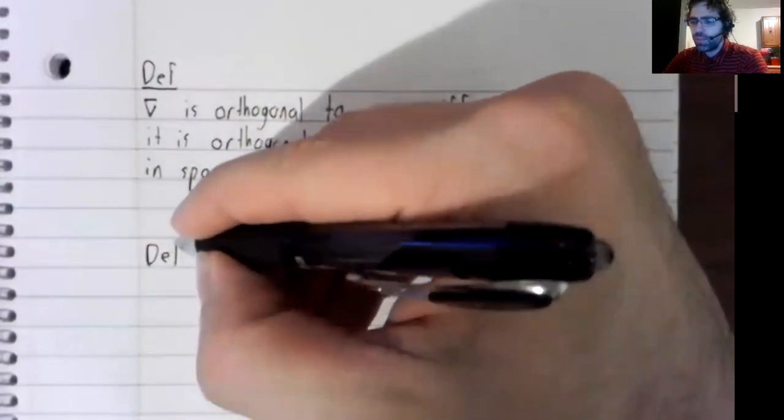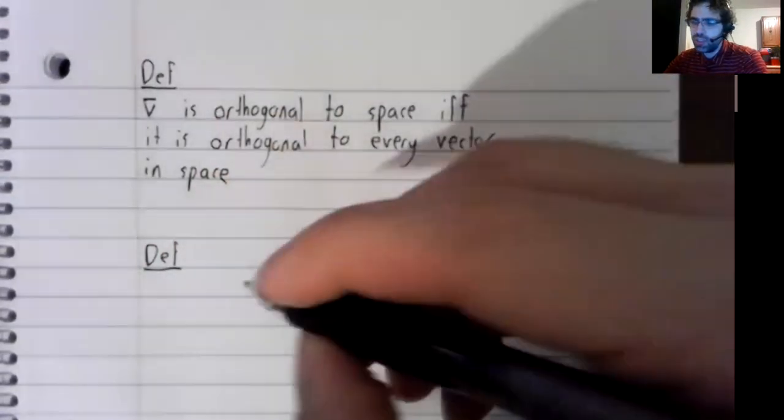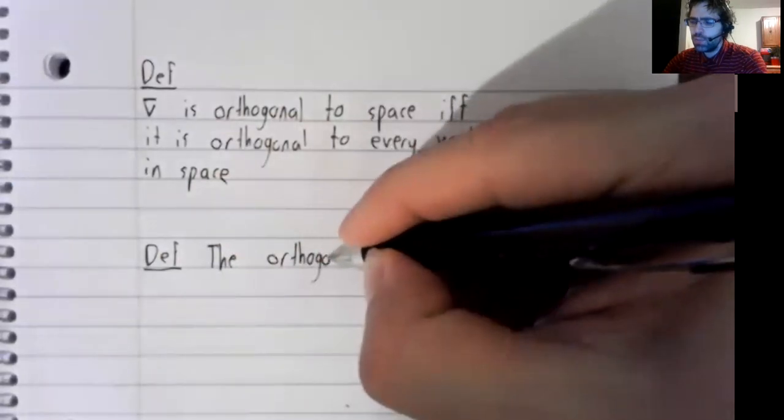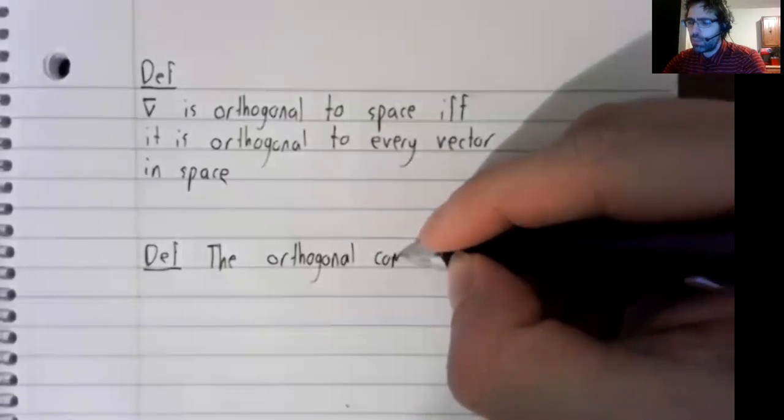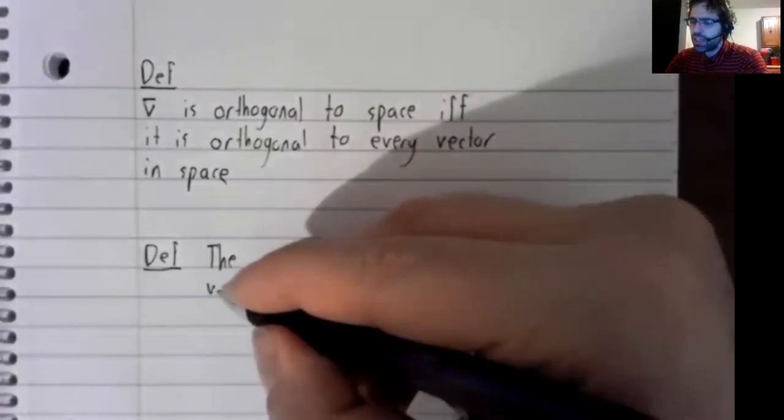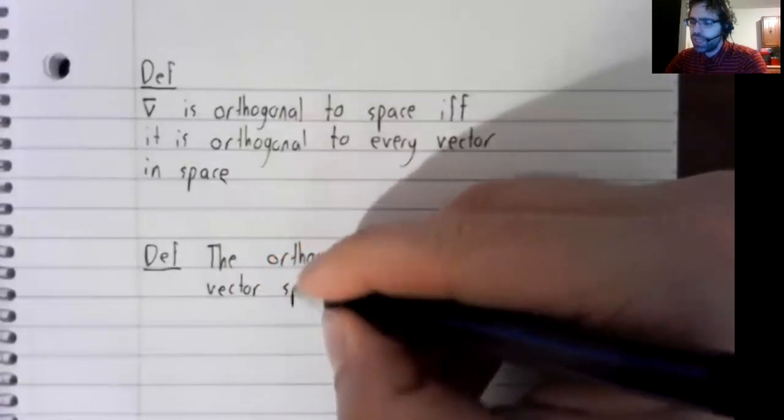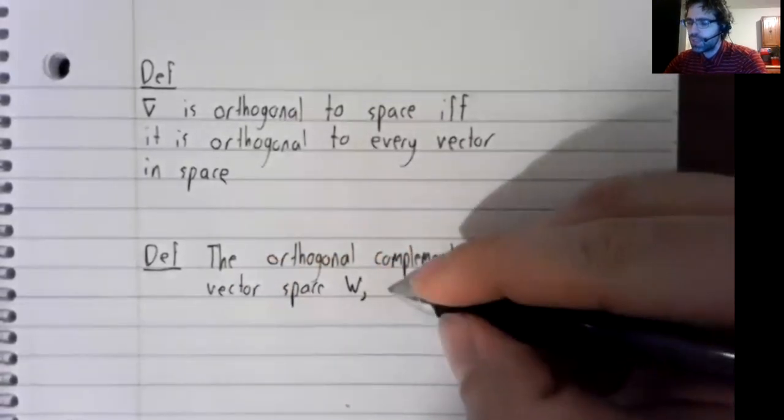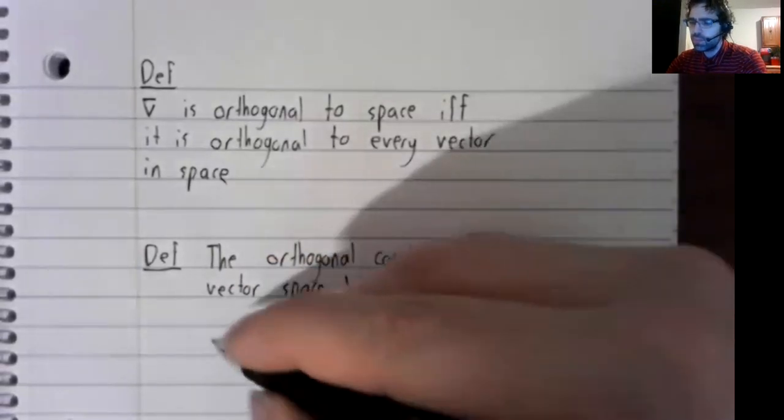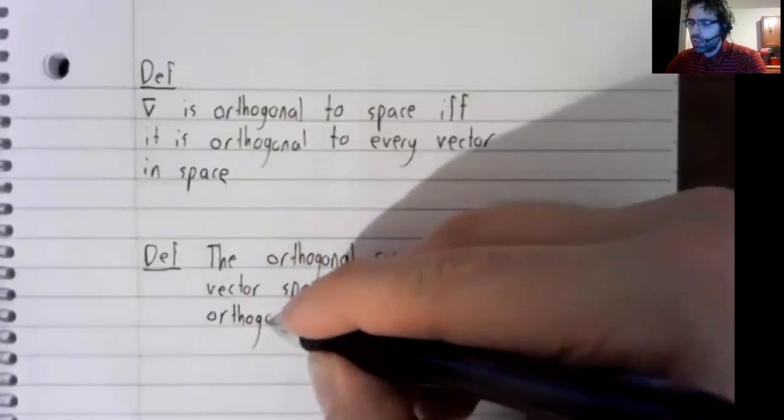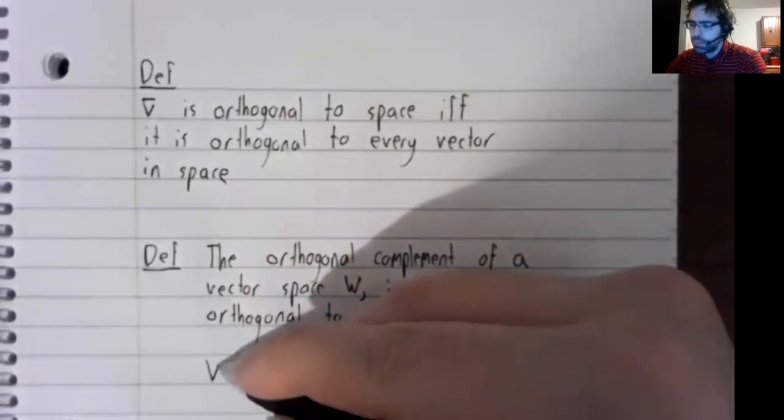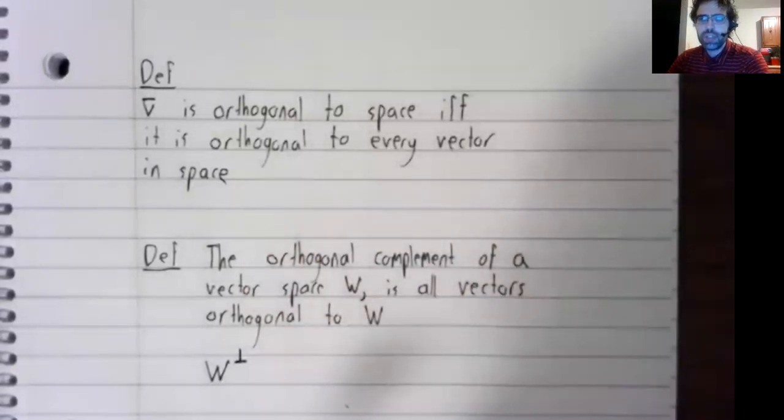And now a second definition. The orthogonal complement of a vector space W is all the vectors orthogonal to W. And it's written like this.